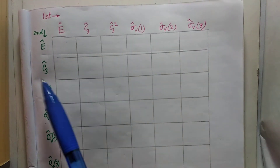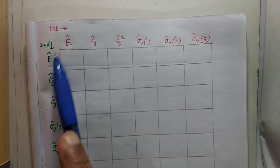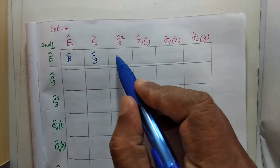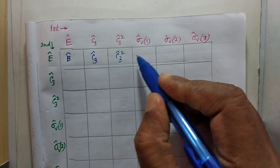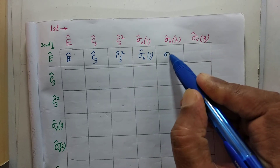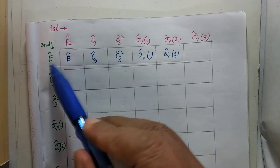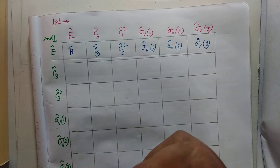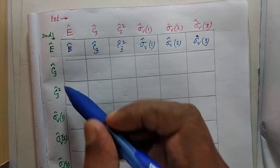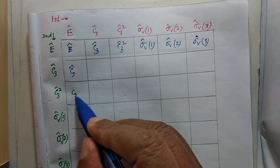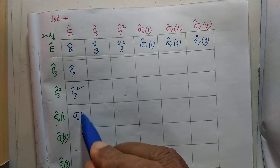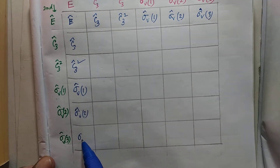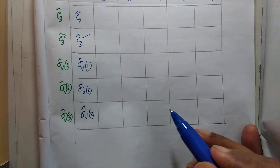The first row of the table can be very easily written down: first E, then E gives E; first E, then C3 gives C3; and so on. This way the first row is written down. Similarly, the first column can be immediately written down because first E then C3 gives C3, first E then C3² gives C3², and so on. These two lines can be immediately written down.